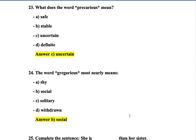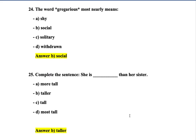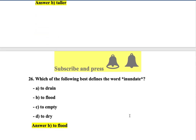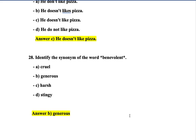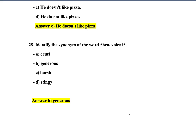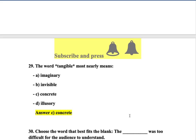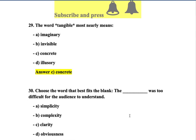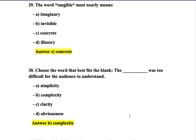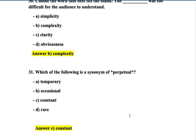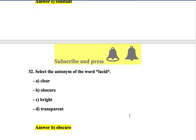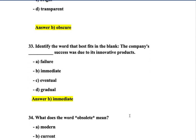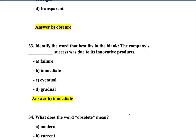Question 20: Select the word that means the same as 'frugal' — economical. Question 21: Identify the antonym of 'liberate' — imprison is correct. Question 22: Use the correct form: 'The effects of climate change are becoming more apparent' — 'are' is correct. Question 23: What does 'precarious' mean? Uncertain. Question 24: The word 'gregarious' most nearly means social. Question 25: Complete the sentence — 'She is taller than her sister' — correct. Question 26: Which best defines 'inundate'? To flood. Question 27: Choose the correct sentence — 'He doesn't like pizza' — option C.